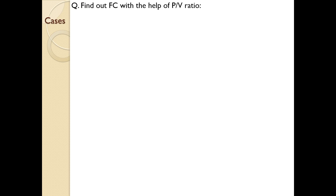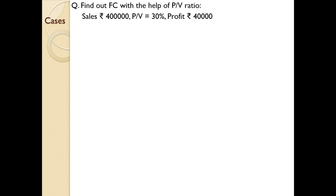Next case: find out fixed costing with the help of PV ratio. We know what is meant by fixed costing and what are the equations for finding the PV ratio. In marginal costing, we learn different types of equations and apply them in certain cases and simple questions. The items given in the question are sales 40,000, PV ratio 30%, profit 40%. So, how are we going to find the fixed costing?